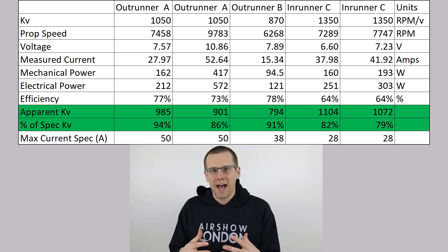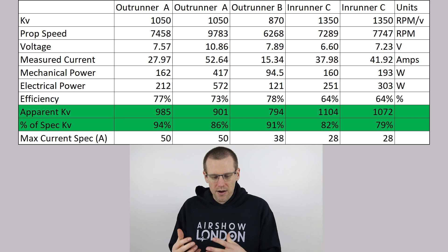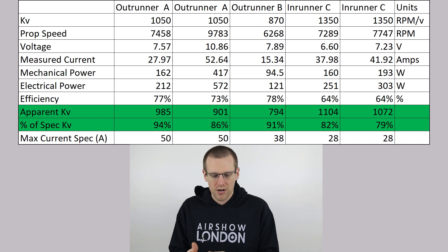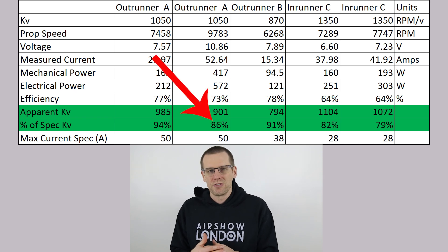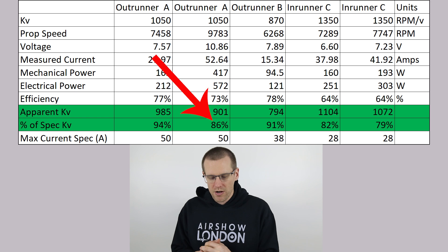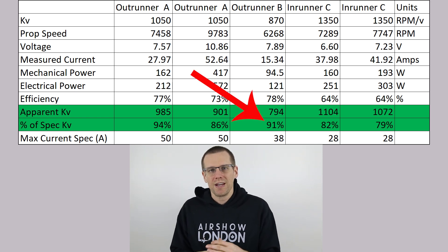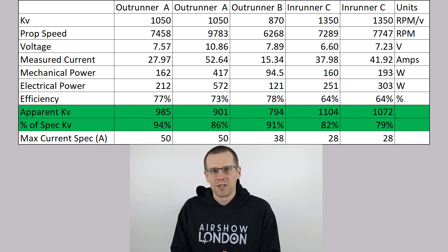So we're about halfway toward the actual current this motor is rated for. Looking at outrunner A a second time, we jumped up to a different battery, applying a much greater load and pushing the current up to 52.64 amps — over the 50 amps this motor is rated for. And you can see when you do that, the percentage of the spec KV drops down to about 86%. Looking at outrunner B, we have a very similar thing happening — 15 amps measured against a max spec of around 38 amps, giving a KV percentage of 91%.